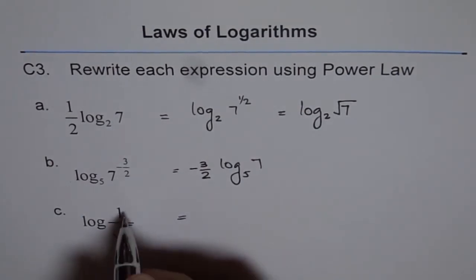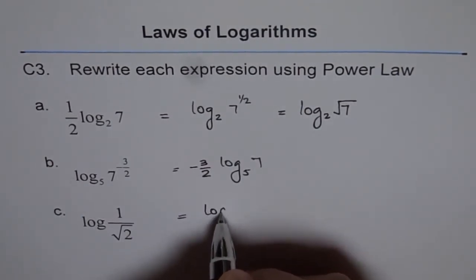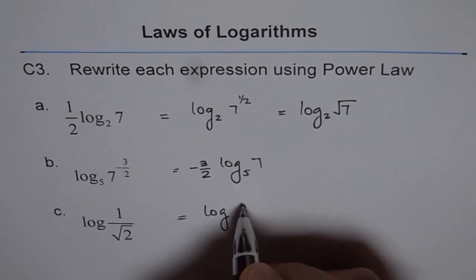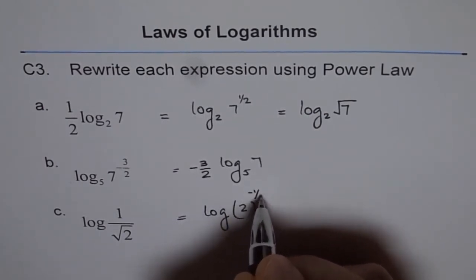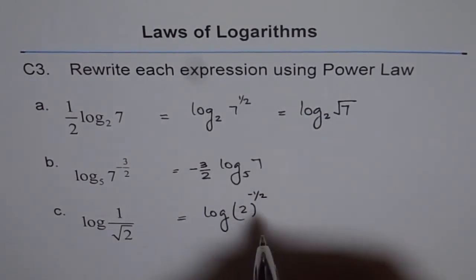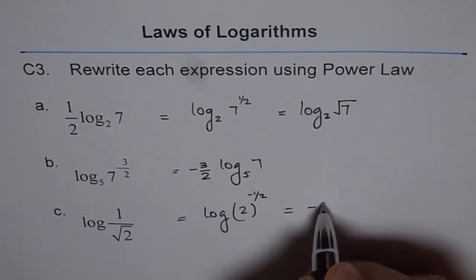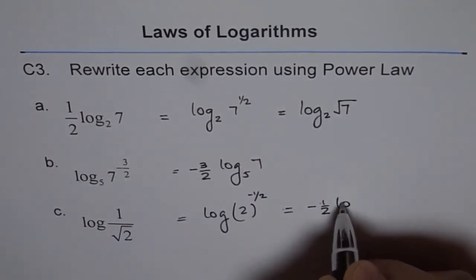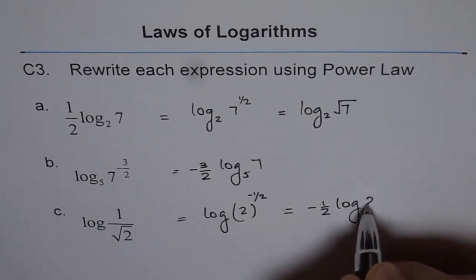Now, log of 1 over square root 2. So that is to say that we have log of 2 to the power of minus half. So it is 1 over square root 2, and that is simplified as minus half log of 2.